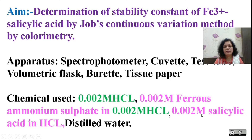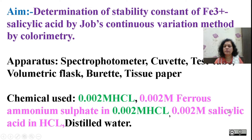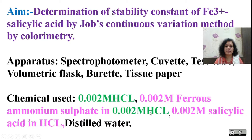For the salicylic acid solution, you are going to prepare it in the same way: find out the amount required to prepare 0.002 molar salicylic acid solution. Once you determine the weight of salicylic acid required, weigh it and dissolve this salicylic acid in 0.002 molar HCl.